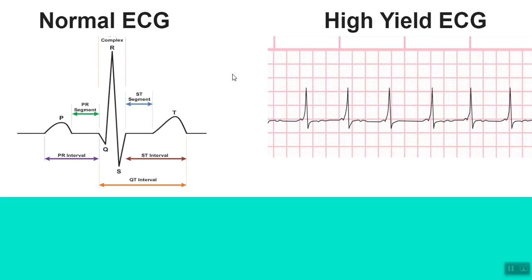Now moving on to our first high-yield ECG. Let's suppose a 17-year-old comes to the ER with loss of consciousness, and he has a history of multiple episodes of losing consciousness due to arrhythmias. On his ECG you see this particular pattern.